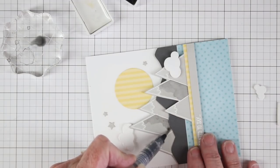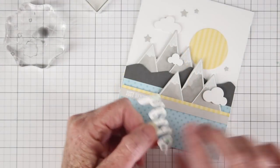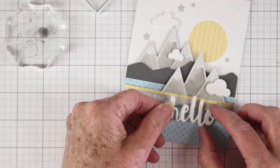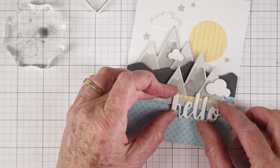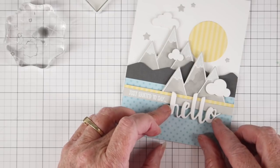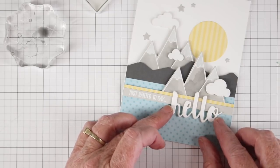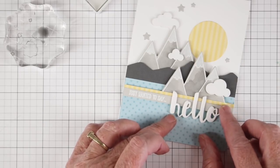I changed my mind on the placement of my word hello so I was able to get that off of that blue paper without any problems with that two-way glue pen. I've added a little bit of foam tape just to the bottom parts of the letters and thought this would look much better sitting on top of that strip.